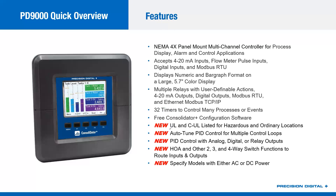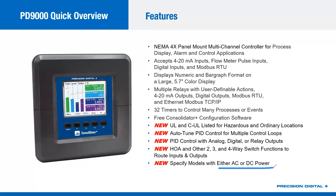Today we're going to talk about the new features specifically: UL and CUL listing for hazardous and ordinary locations, auto-tuning PID control for multiple control loops, and HOA switching support using two-, three-, and four-way internal switching functions. Additionally, you now need to specify AC or DC power when ordering — the part numbers have been adjusted accordingly as a result of obtaining that UL and CUL listing.